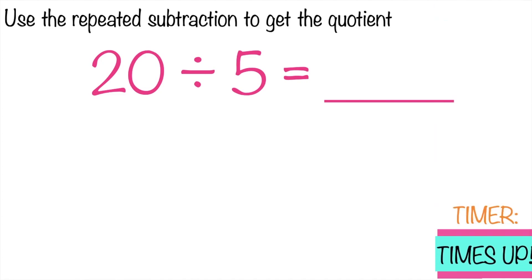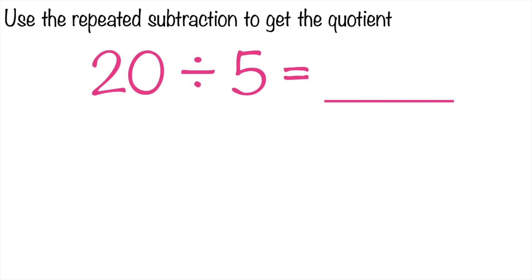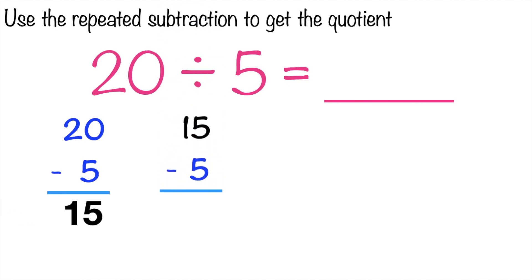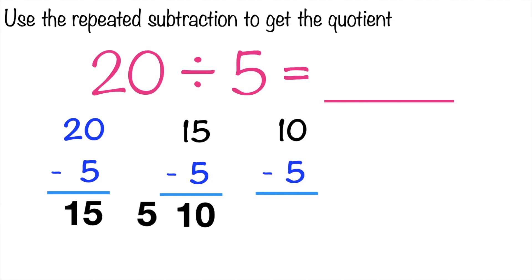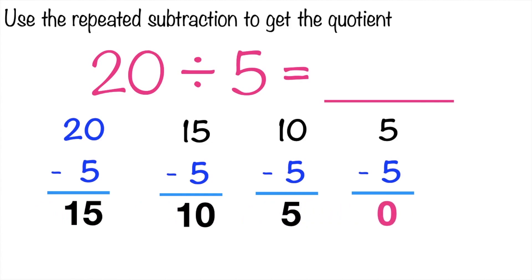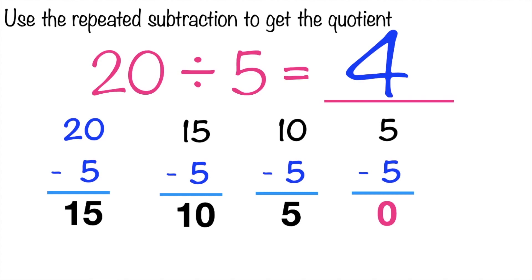Time's up. Let's see if your answer is correct. So again, children, how are we going to solve this? Very good. We're going to subtract the numbers as many times as we can until the difference becomes zero. So 20 minus 5 equals? Very good. It's 15. Then 15 minus 5 equals? 10. Then 10 minus 5 equals? 5. Then 5 minus 5 equals? Zero. Since we reached zero, we can now write the quotient. Remember, the quotient is the number of times you subtracted the number. So what is the quotient? Good job! It's 4. We have 20 divided by 5 equals 4.